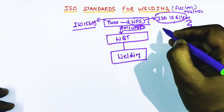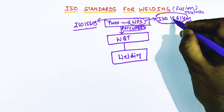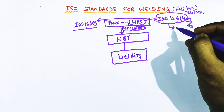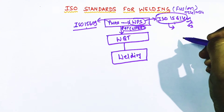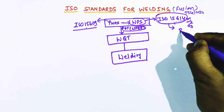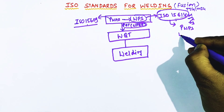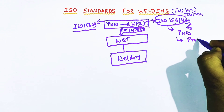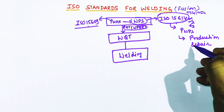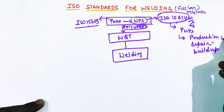Once the WPS is finalized, we start the welder qualification test. The full name of ISO 15614 is 'Specification and qualification of welding procedures for metallic materials — welding procedure test.' It describes how the PWPS is qualified by welding procedure test, and this code applies to all production welding, repair welding, and build-up welding.